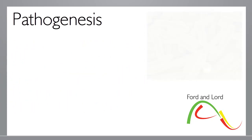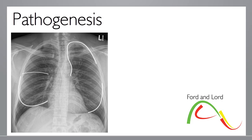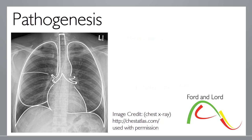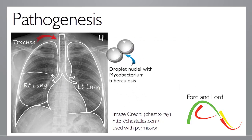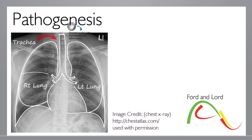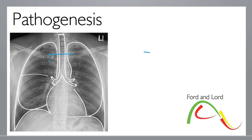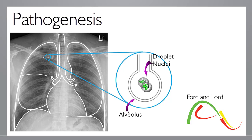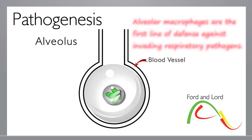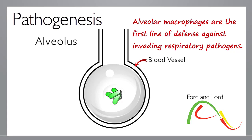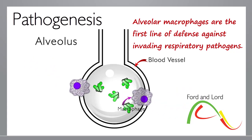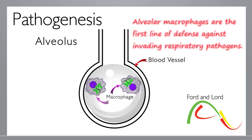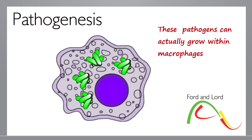Initially, droplet nuclei full of bacteria are inhaled into the lungs. The organism is then taken up by alveolar macrophages. However, several defensive mechanisms of Mycobacterium tuberculosis can stop macrophages from killing them, and hence the bacteria can multiply within the macrophages.